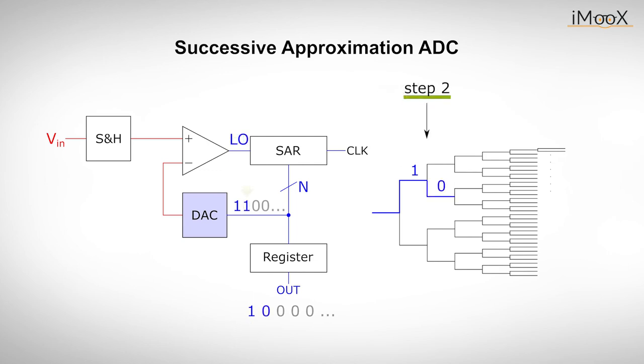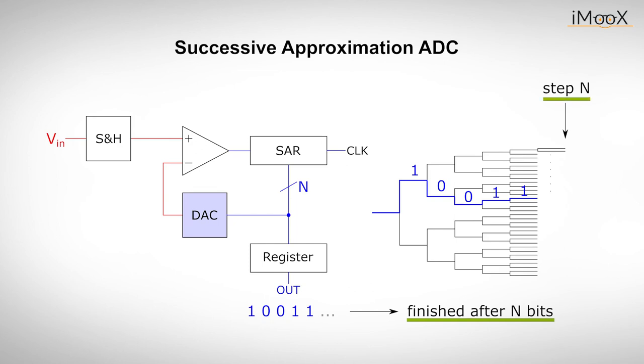In the second step, the next less significant bit is set to one for testing purposes and the result of the comparison is observed. If a larger input voltage results again, a logical one remains at this position. Otherwise, a zero is entered in the second position of the memory and so on. After n clock cycles, the digital output in the memory is approximated to the input signal to an accuracy of n bits. The accuracy of the converter depends essentially on that of the internal DAC. Formally, the system can be regarded as a feedback loop containing a DAC. The conversion process then corresponds to the transient oscillation of the loop.